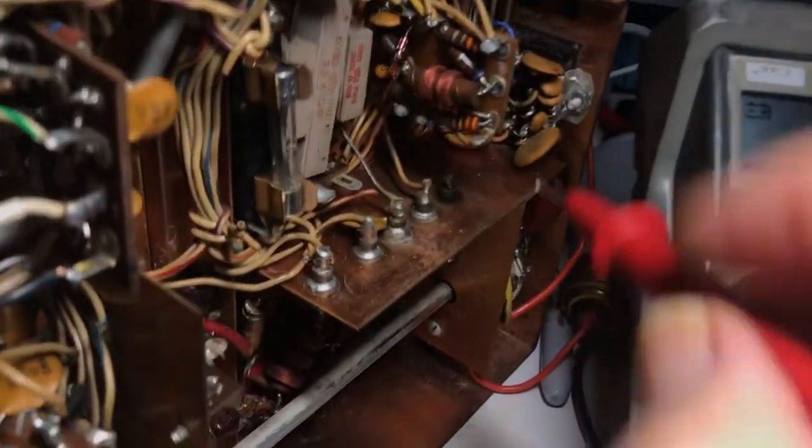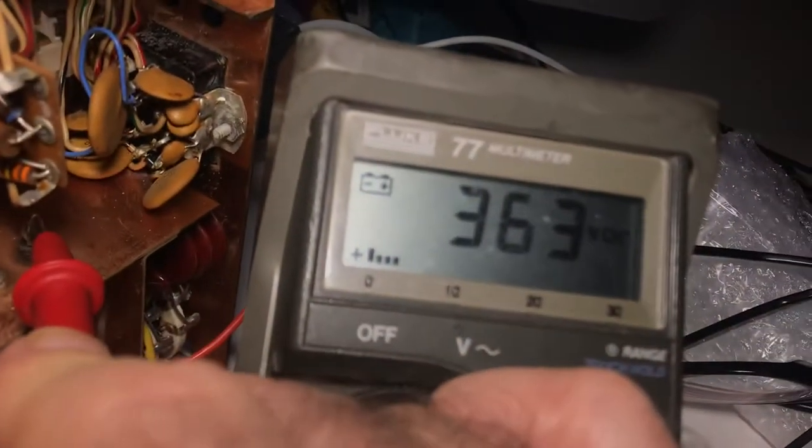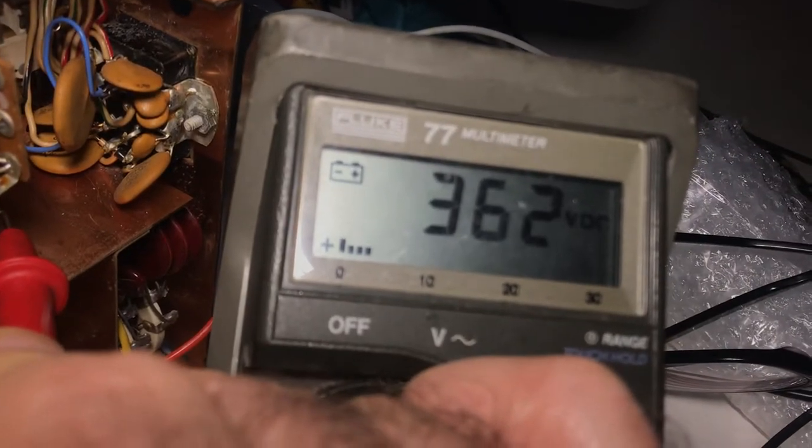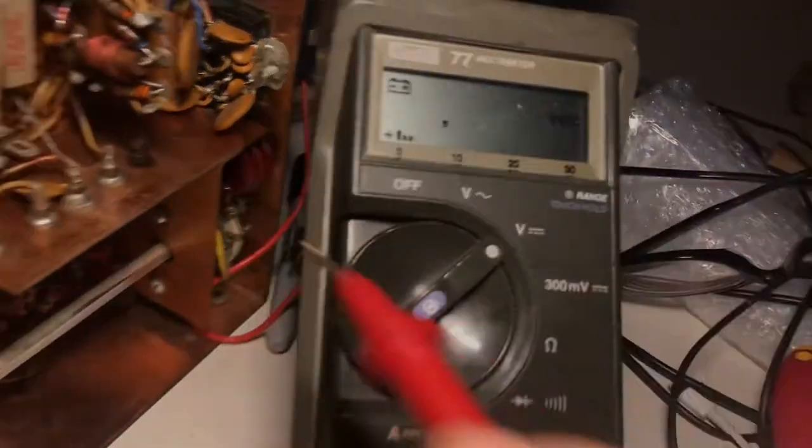So I'm going to take apart the AC power supply now and rebuild it. I was hoping that wouldn't happen. Yeah, now I got 300 volts, I should have 600 volts, so my finals won't drive.